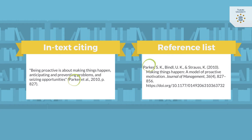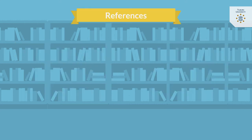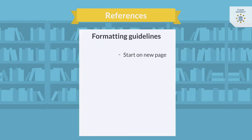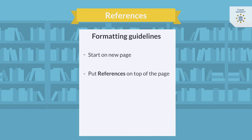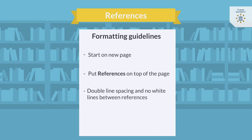Let's start with some formatting guidelines for your reference section. First, make sure your reference list starts on a new page. Second, put 'References' in bold as the title at the top of this page and centre this heading. Third, make sure the line spacing is the same as for the rest of the paper — this means double spacing and no white lines between references. Fourth, indent from the second line of every reference.